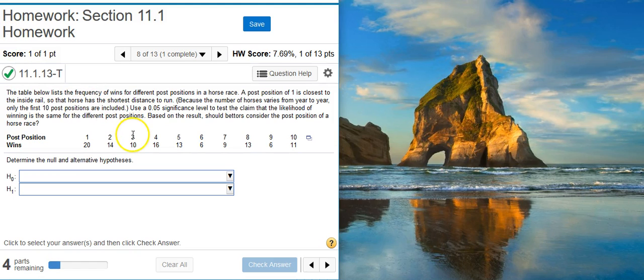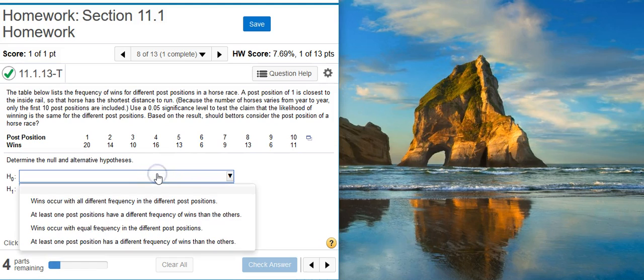What we're conducting here is a goodness of fit test because we've got these positions for the different horses and we're testing the claim that the likelihood of winning is the same for each of the different post positions. So because the claim is that everything is the same and we've got more than just two elements that we're looking at here, that's going to indicate goodness of fit hypothesis testing. When you have goodness of fit hypothesis testing, the null hypothesis is always the same and it is that everything is equal.